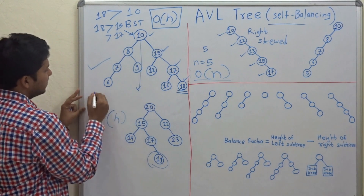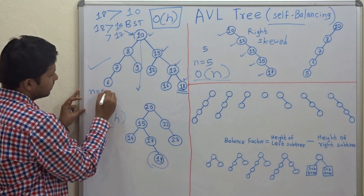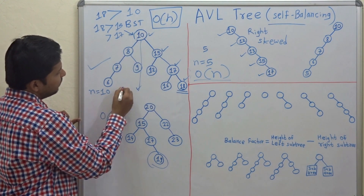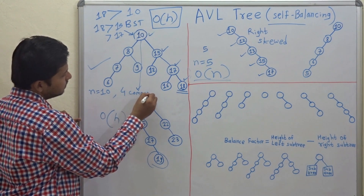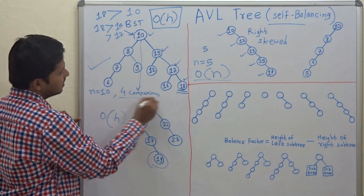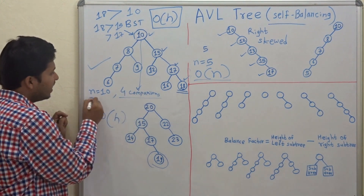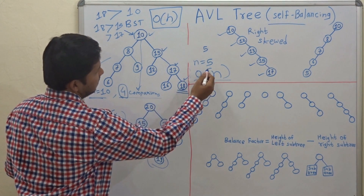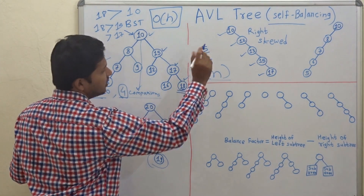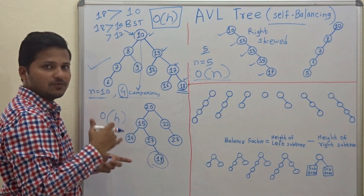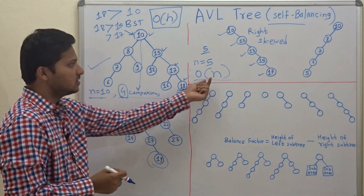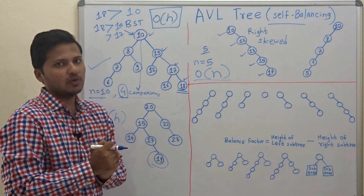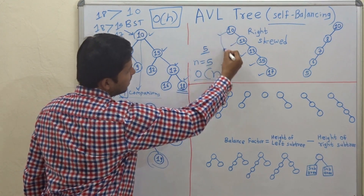In the previous balanced example there were 10 elements and we made only 4 comparisons — that is fine. But here there are 5 elements and we are making 5 comparisons, meaning we are comparing all elements in the worst case. This is not a good time complexity for an efficient program, so we have to balance such trees.